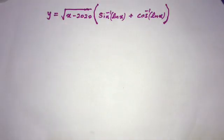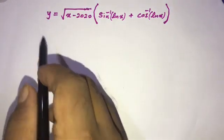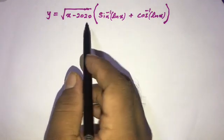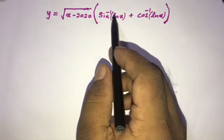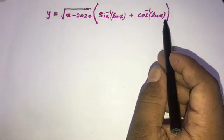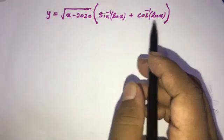Hi, welcome to the Mathematics MI channel. Today we are going to discuss another differentiation question. The question is: if y equals square root of x minus 2020 times inverse sine natural log of x plus inverse cosine natural log of x, then we need to find dy by dx.